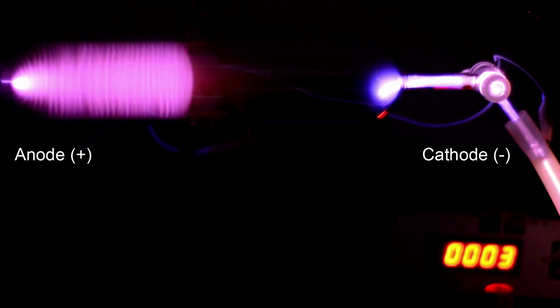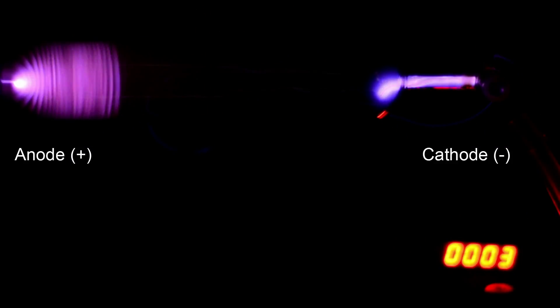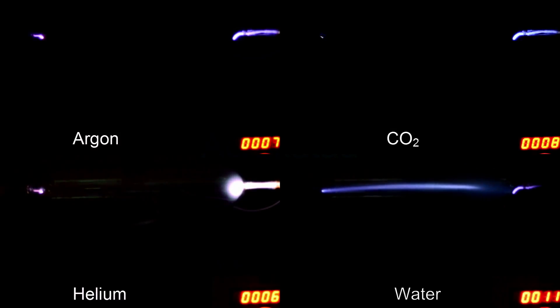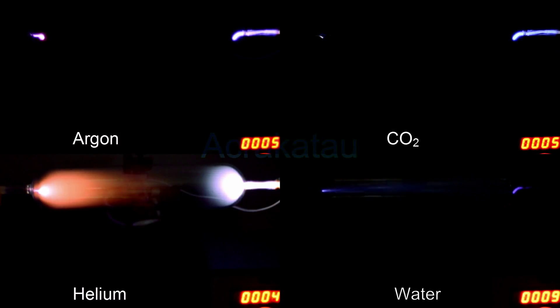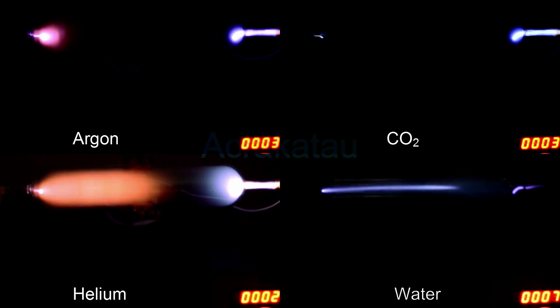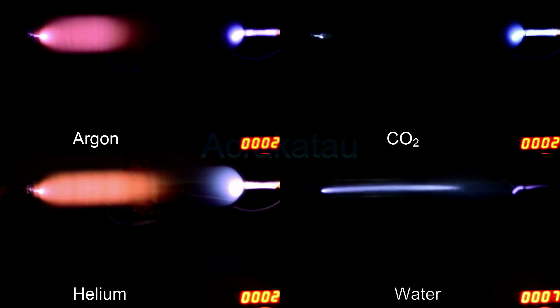First we have a tube filled with air. You can clearly see the bright negative glow area on the cathode and the positive column with its layers. With other gas fillings — first argon, then carbon dioxide, then helium, then water — you can clearly see all the plasmas have a different color, and also the structure of the positive column is different for each gas.